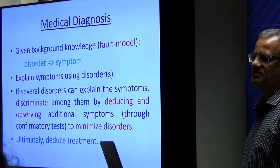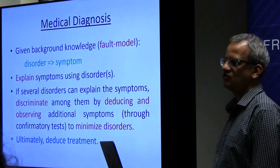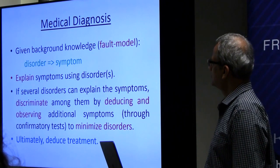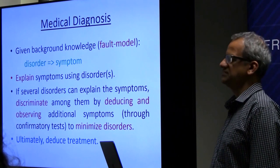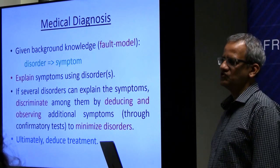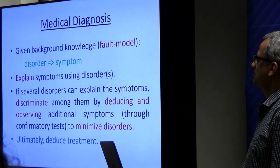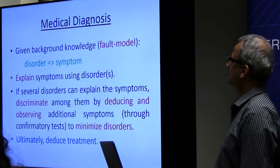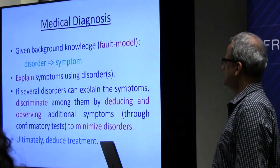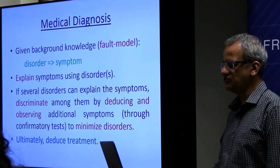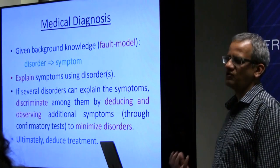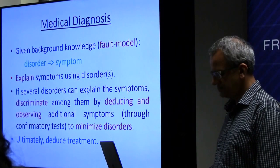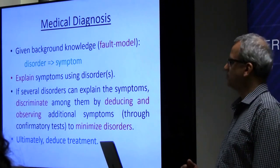Background information about the relative prevalence of a disease might also help figure out the most likely cause. If you distill the nature of background knowledge that the doctor is using, you can think of it as information distilled as disorder-symptom pairs — a cause-effect relationship. This is also called fault model-based representation, where you have a bunch of faults and represent how they manifest in the real world.